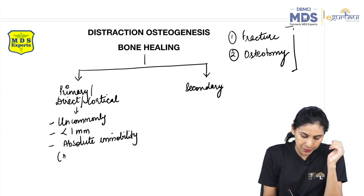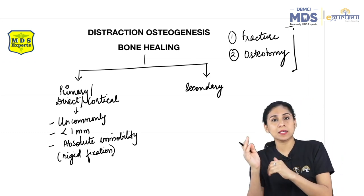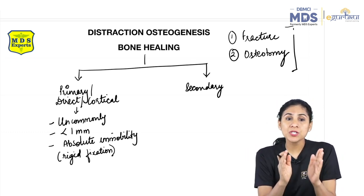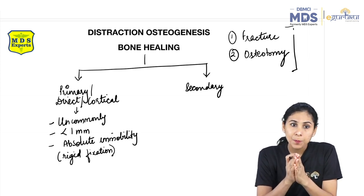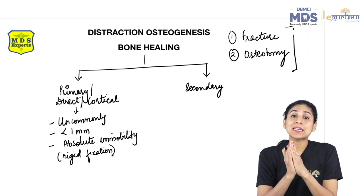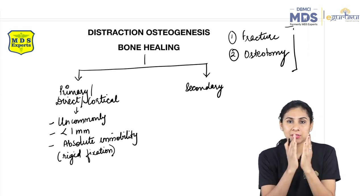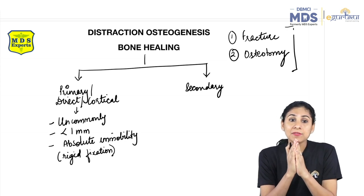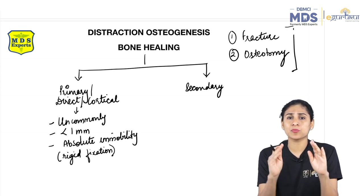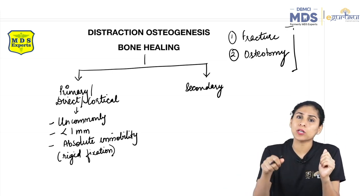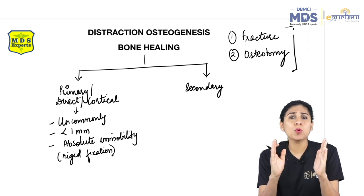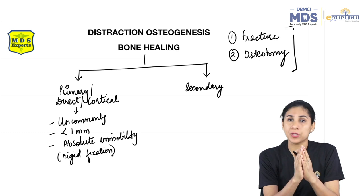Primary bone healing happens only with rigid fixation. Just remember that primary or direct bone healing is uncommon. It happens only when there is less than 1 mm gap between bone fragments, absolute immobility, and when a thick rigid plate with bicortical screws is placed. Only then will there be primary bone healing.